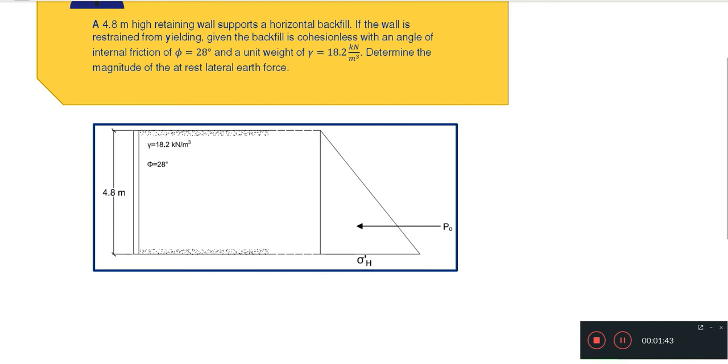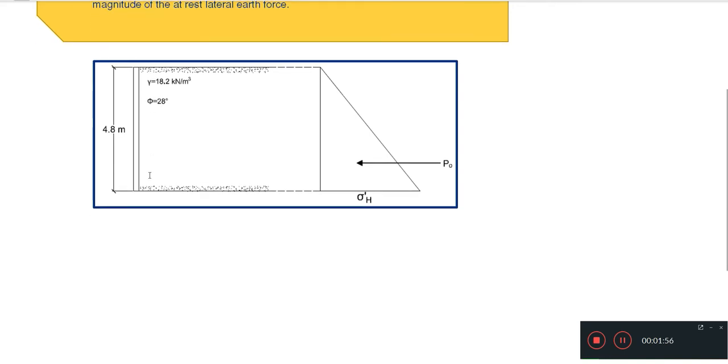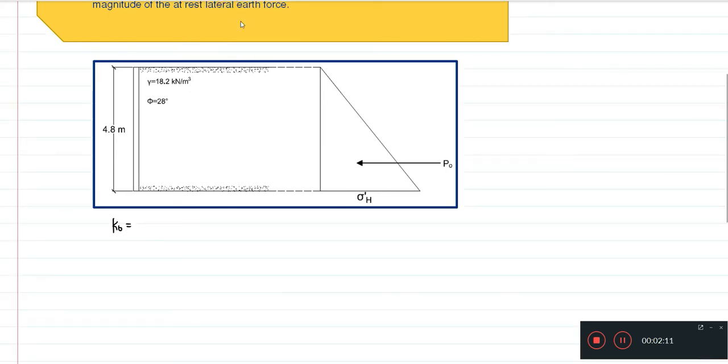So for our retaining wall, since this is what it supports, we have to determine first the pressure coefficient or the at rest pressure coefficient using the equation given to us by Jackie. So that will be K sub O is equal to 1 minus the sine of phi.